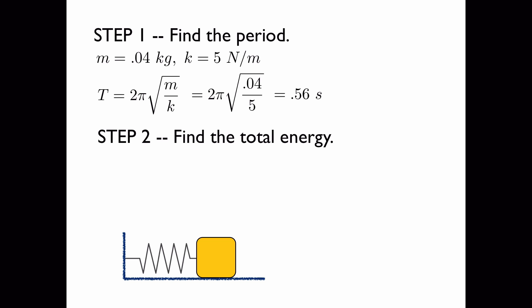Step 2 is to find the total energy. We'll use the total energy when we're calculating the maximum velocity. So the amplitude is 4 centimeters or 0.04 meters, and the formula for the total energy in terms of the spring constant and the amplitude is this. So we plug in what we know, and we get an energy of 0.004 joules.